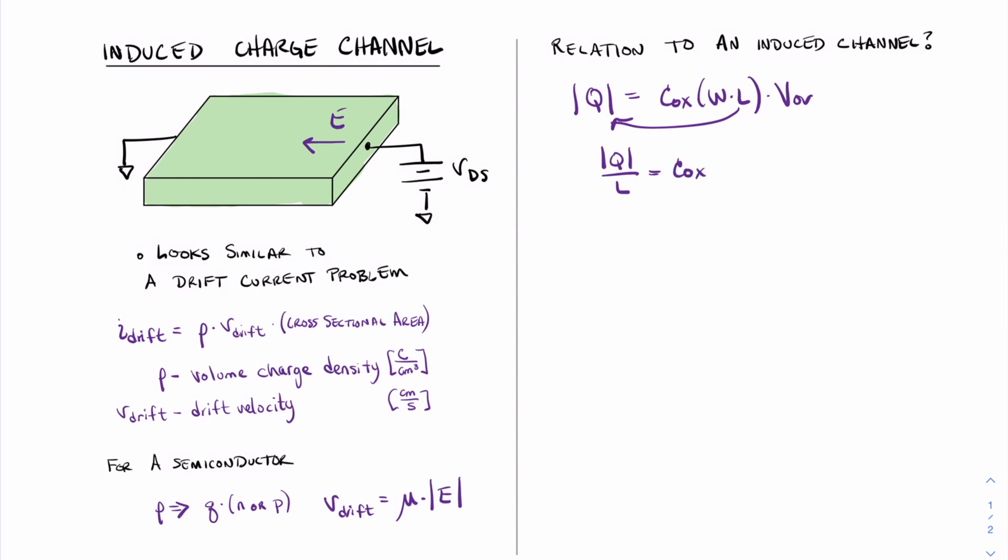And that means that what we have is a value of magnitude of Q divided by this unit length L is equal to Cox times the width times the over voltage. And this value of Q over L is one step in getting the volume charge density of this device.